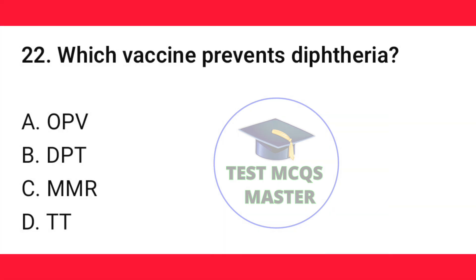Question number 22. Which vaccine prevents diphtheria? The correct option is B — DPT.